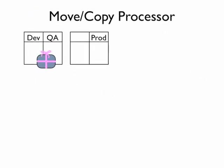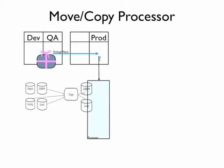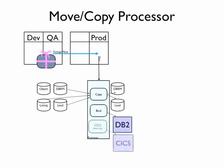However, when we go to move to production, at this stage we're grouping changes together into packages. The packages may use the processor, but this time we're more likely to do a copy process. But again, we may still need to do binds and kicks new copies, again as needed.